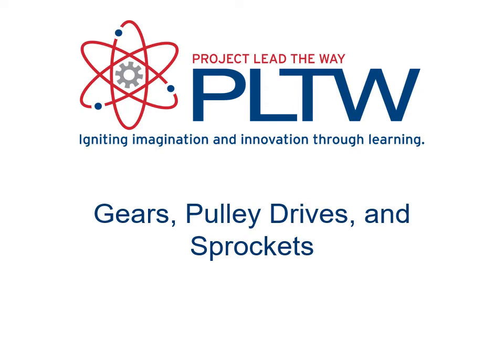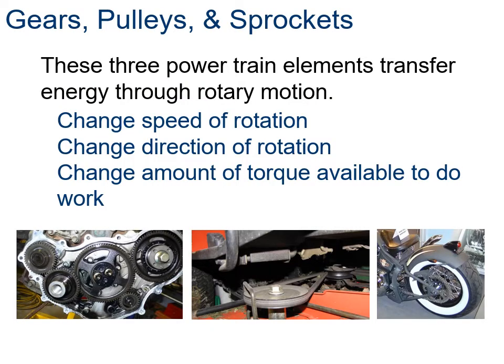Today's lesson is on gears, pulley drives, and sprockets - three powertrain elements. Gears on the left look like they're from a car engine, the pulley drive looks like it's from a mower, and sprockets and chains are from a motorcycle. All of them transfer energy through rotary motion - meaning spinning around - and they change the direction of rotation and how much torque is available.